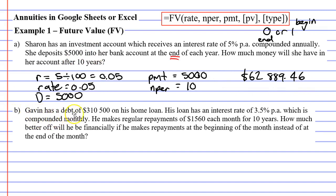Gavin has a debt of $310,500 on his home loan. His loan has an interest rate of 3.5% per annum, which is compounded monthly. He makes regular repayments of $1,560 each month for 10 years. How much better off will he be financially if he makes repayments at the beginning of the month instead of at the end of the month?